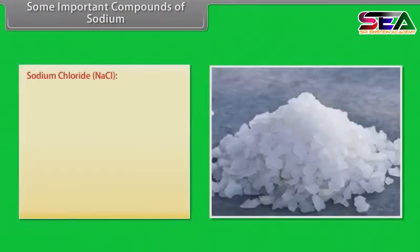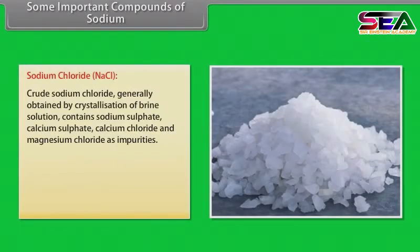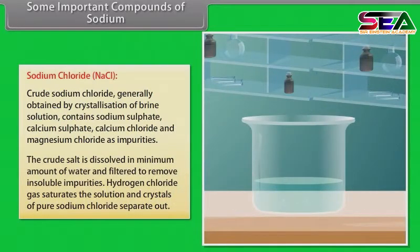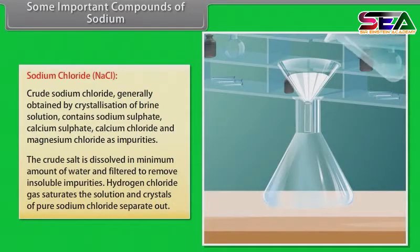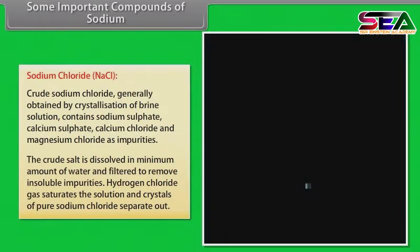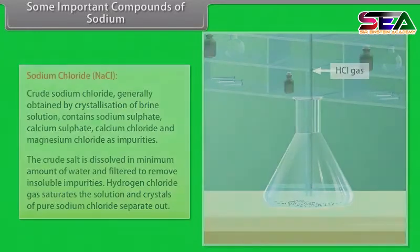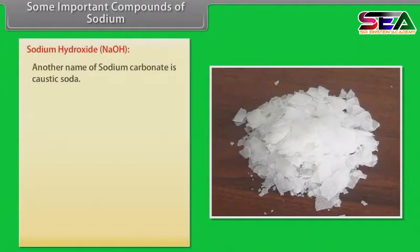Crude sodium chloride, generally obtained by crystallization of brine solution, contains sodium sulfate, calcium sulfate, calcium chloride and magnesium chloride as impurities. The crude salt is dissolved in a minimum amount of water and filtered to remove insoluble impurities.